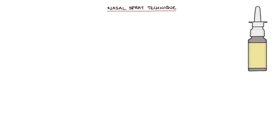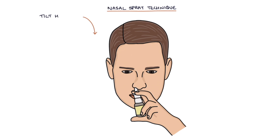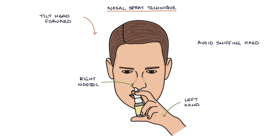Next let's talk about nasal spray technique. Steroid nasal sprays are often misused, which means they won't be as effective. A good question to ask is: do you taste the spray at the back of your throat after using it? If the patient tastes the spray it means it's gone past the nasal mucosa and will not be as effective. Good technique involves tilting the head slightly forward, using the left hand to spray into the right nostril and vice versa — this directs the spray slightly away from the nasal septum — avoiding sniffing hard during the spray, and then very gently inhaling through the nose after.